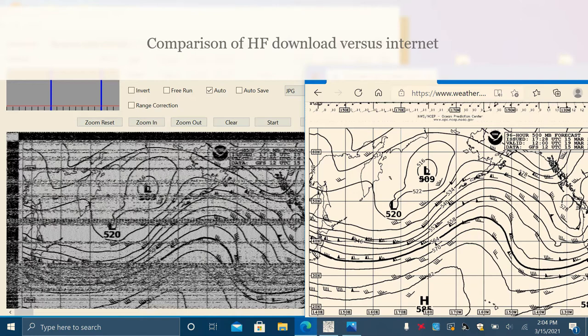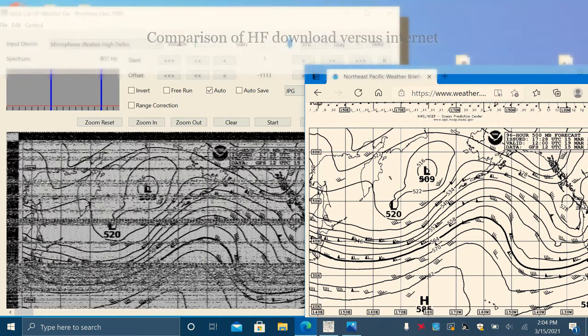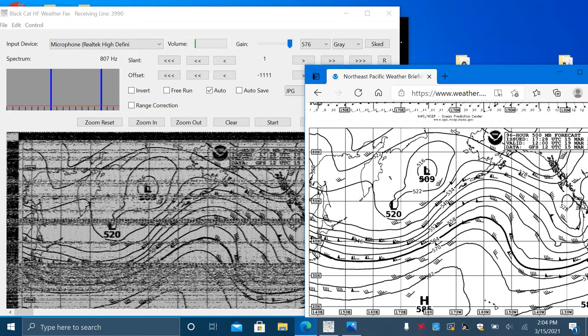So this is a comparison between the HF fax download over the radio and an internet-captured image. You can see the internet-captured image is much better. But I think you can be able to discern the information on the download.